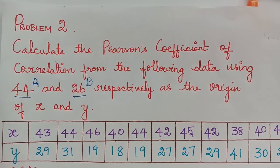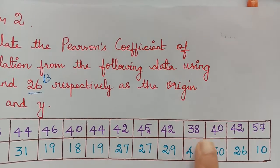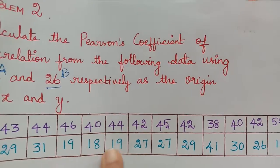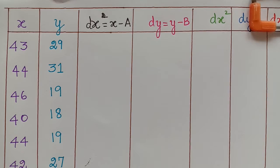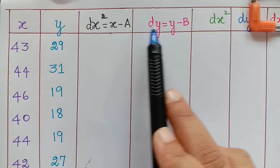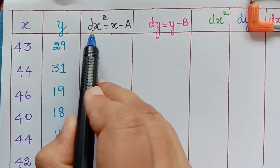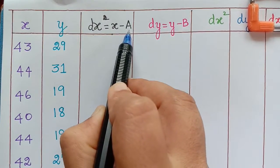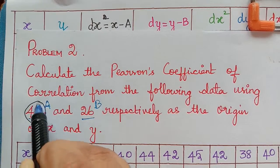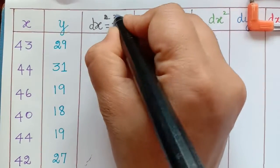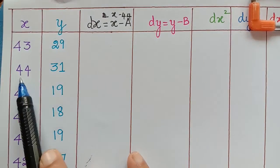We shall now form the table for all the values of x and y. These are the values of x given and these are the values of y which are given. Let us draw the tabular column now. I have drawn the tabular column with columns for dx, dy, dx², dy², and dx·dy. First we will evaluate dx. dx equals x minus capital A, and capital A is given as 44. So dx equals x minus 44, and for each value of x we must compute x minus 44.